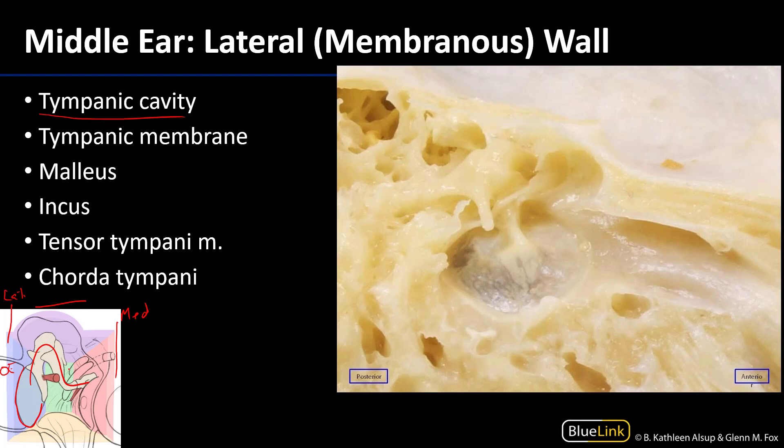Having this cartoon is going to be helpful as we look at the cadaveric images here. What we're looking at is a medial view of the lateral wall — we are looking from the medial wall towards the outer ear. Here is the tympanic membrane, and beyond that tympanic membrane would be the outer ear.